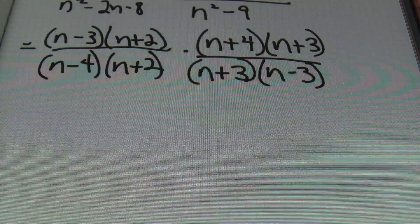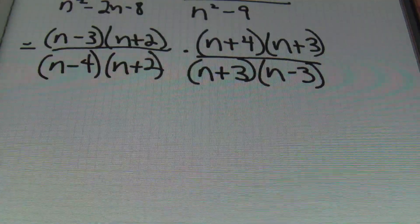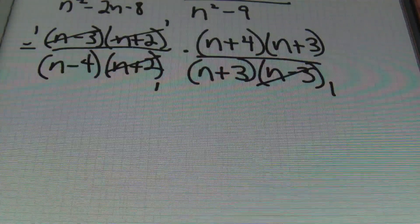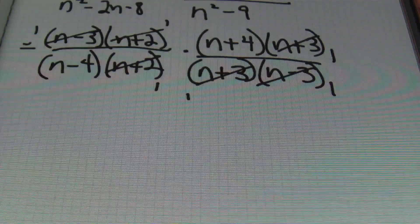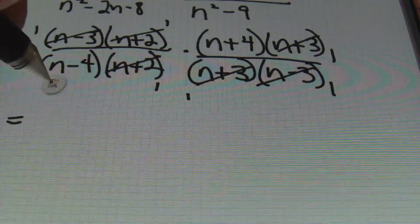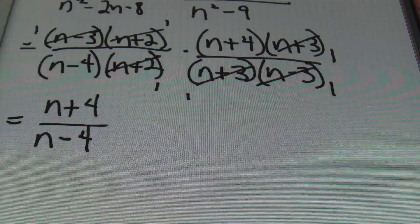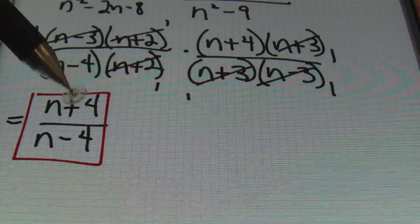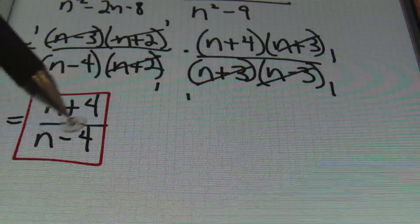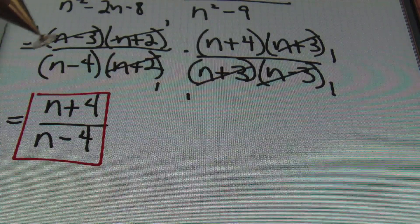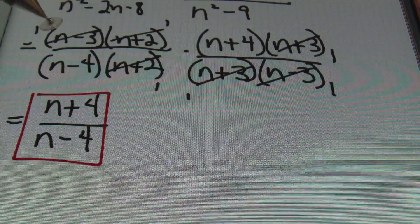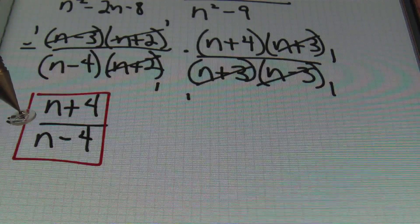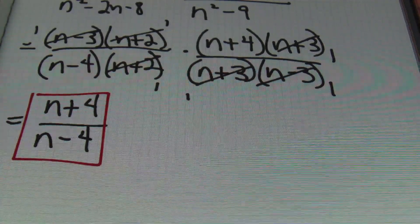From here I'm going to simplify before I multiply. The n plus 2s cancel out, the n minus 3s cancel out, and the n plus 3s cancel out — canceled to 1, not 0. That leaves n plus 4 over n minus 4 as the answer. Note that since n plus 4 and n minus 4 are separated by addition and subtraction signs respectively, every element within the fraction would need something in common to reduce further. You cannot cancel out the n's or the 4s individually — we were looking for exact factors. Since n plus 4 is not identical to n minus 4, you can't simplify it any further. That's the final result.